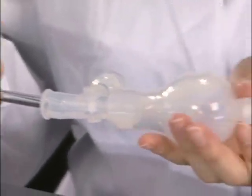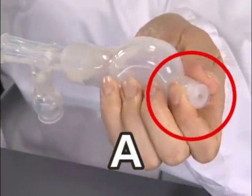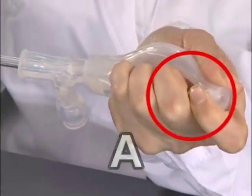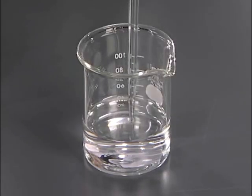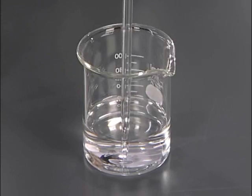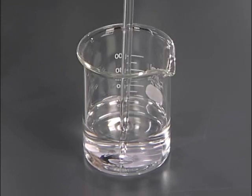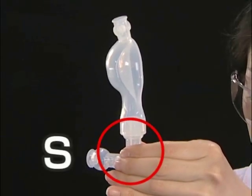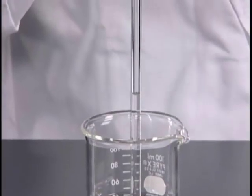Firstly, squeeze the rubber bulb while pressing valve A. Insert the tip of the pipette deeply into the liquid. By pressing valve S, slowly draw the liquid a little above the marked line.